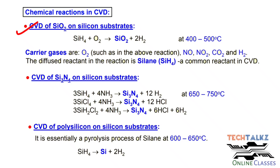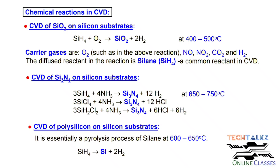Let's apply a chemical reaction example for silicon dioxide. When the reactant gas silane is added along with oxygen at high temperature, you get SiO2 and hydrogen. The SiO2 is deposited on the substrate and hydrogen is the byproduct.